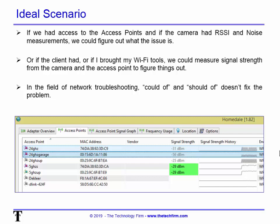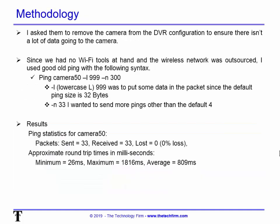The methodology: I asked them to remove the camera from the DVR configuration to ensure there wasn't a lot of data going to the camera, and we proved the DVR was working fine once that camera was removed. Since we had no Wi-Fi tools at hand and the wireless network was outsourced, I used good old ping with the following syntax: ping [camera name] -l 999 -n 300. The -l 999 puts data in the packet — the default ping size is 32 bytes, which is way too small. The -n 33 sends 33 pings instead of the default four.